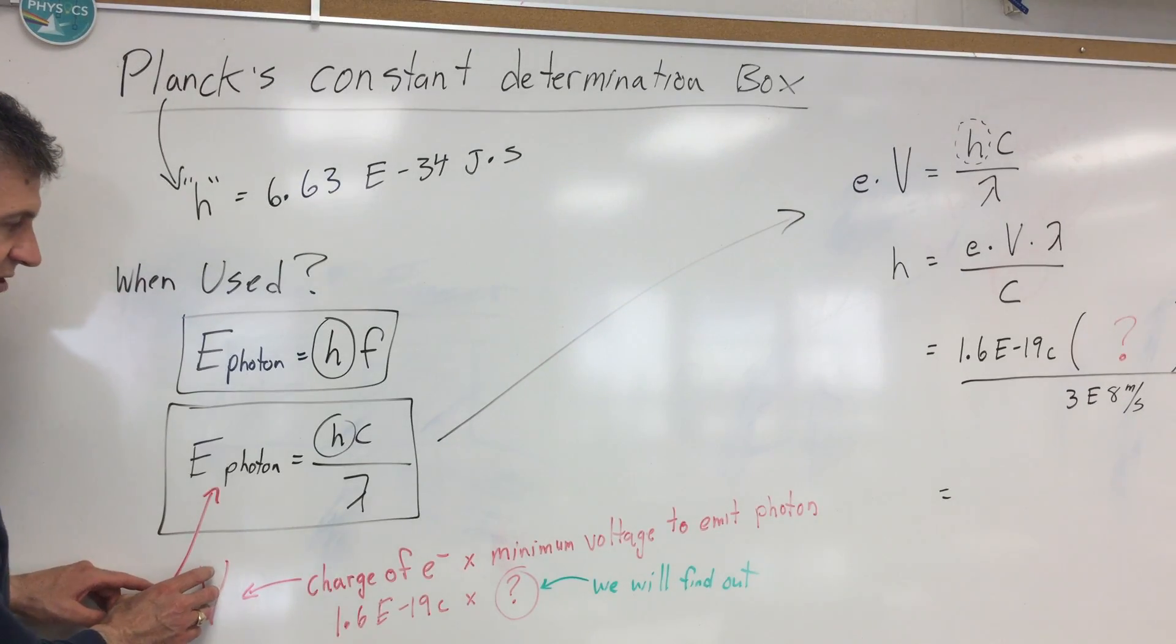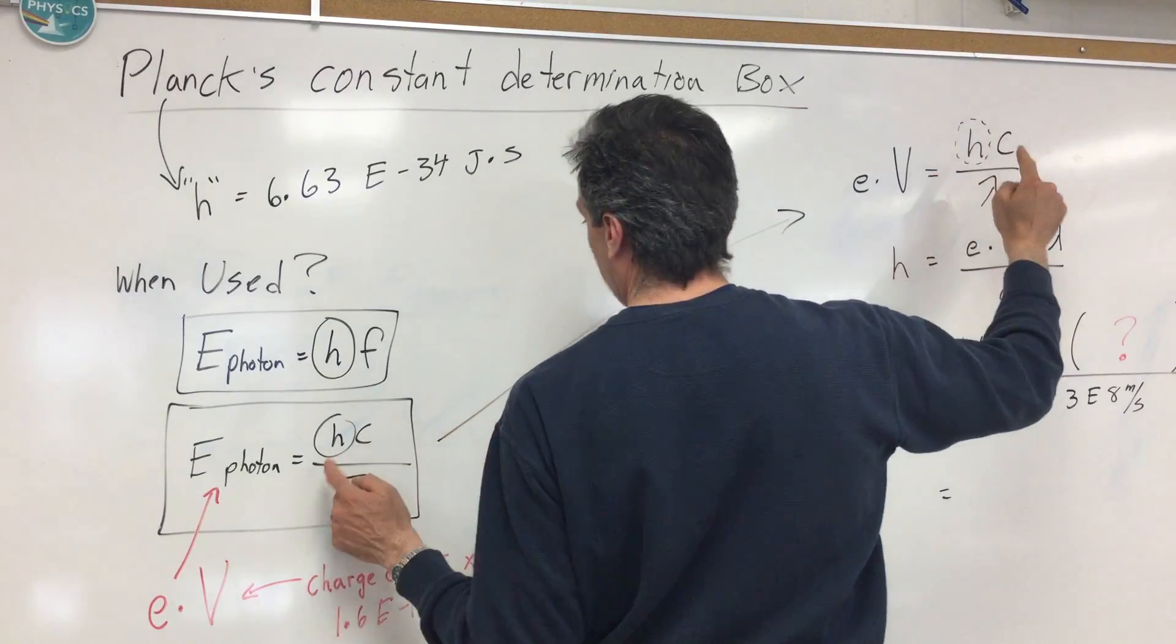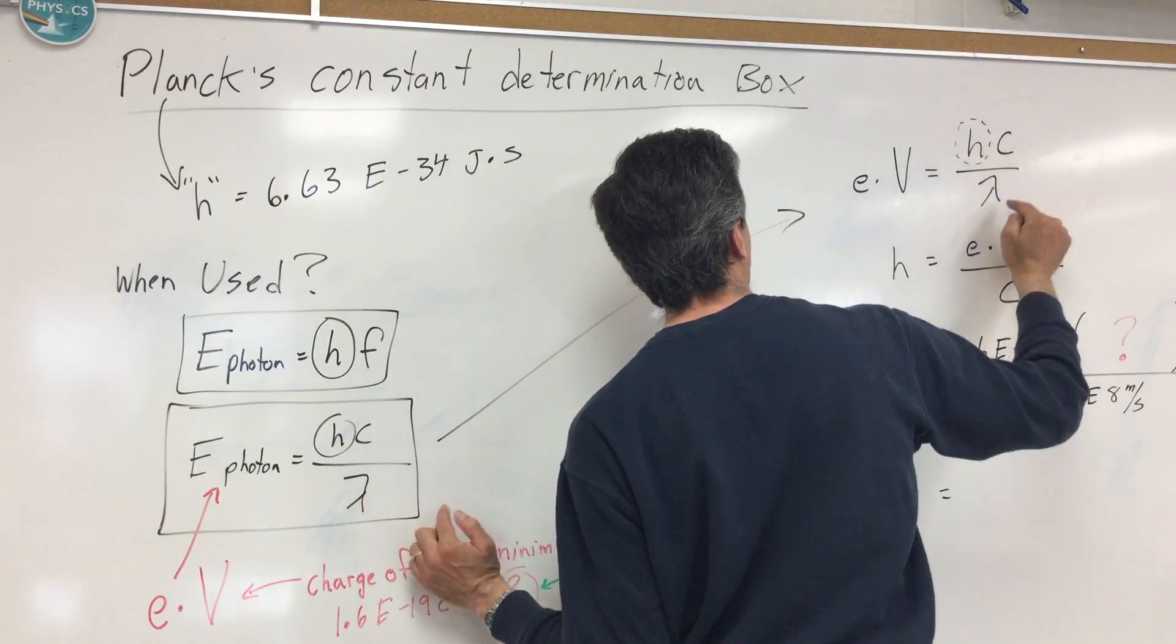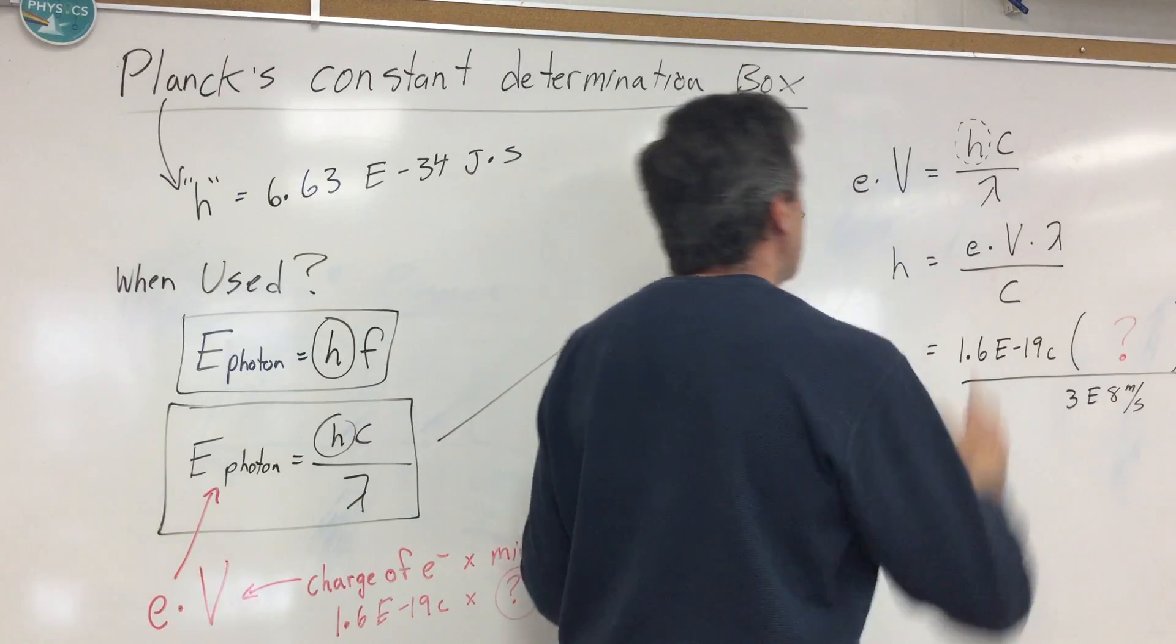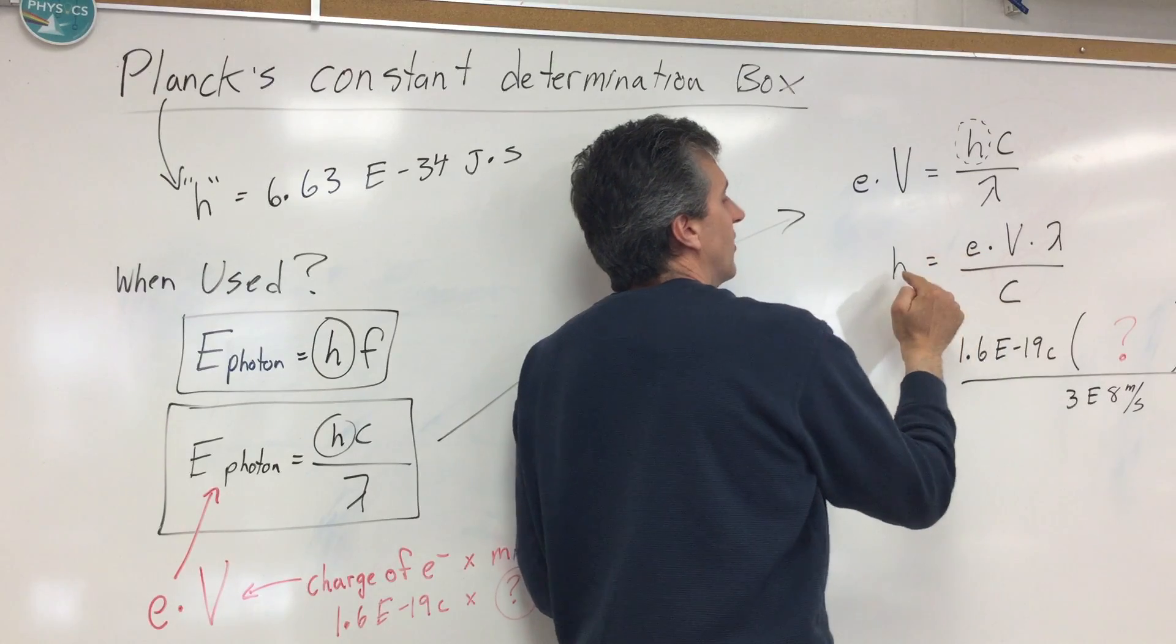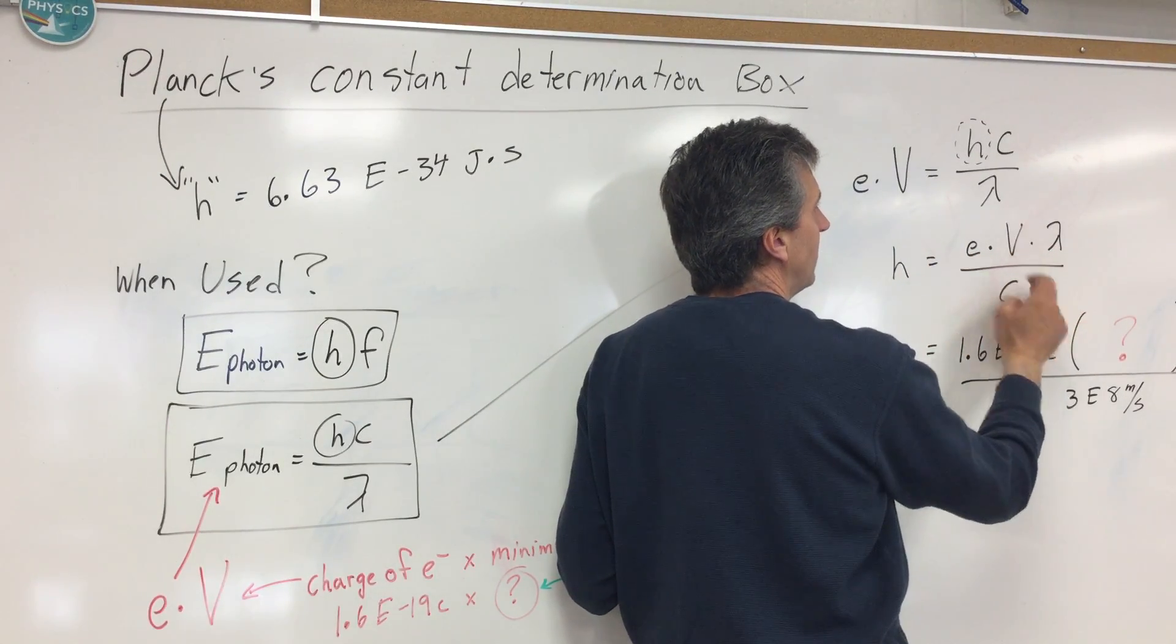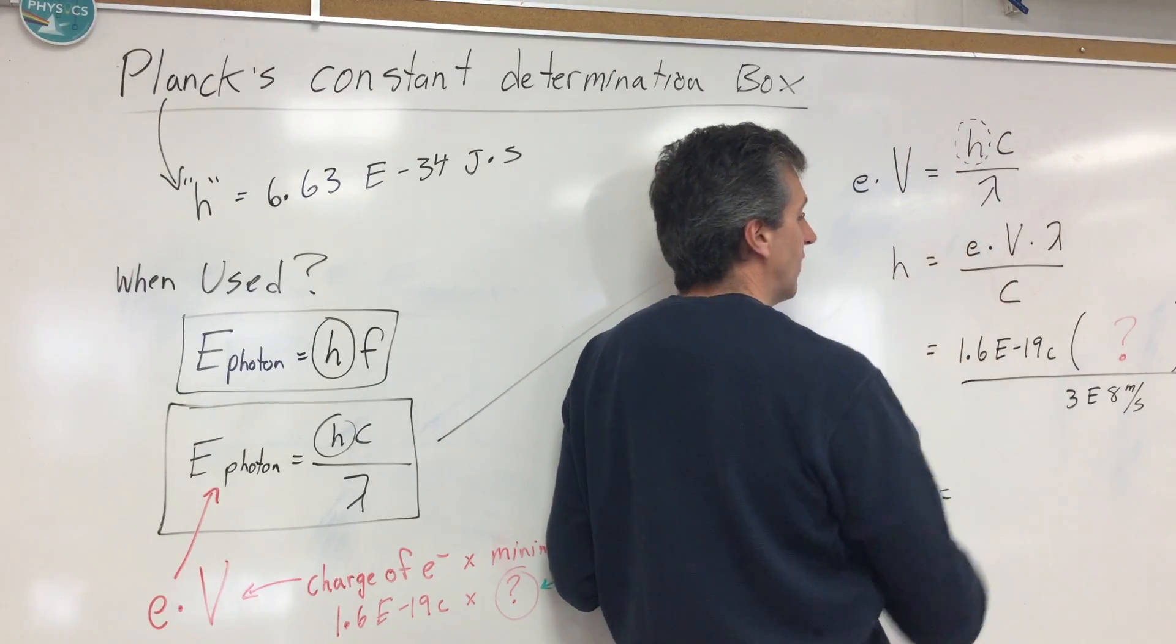All right. So here we go. Let's take this equation and change it slightly. So instead of E of a photon, we're going to say EV. And we're still going to have H C over lambda. That's going to remain the same. But since I'm solving or I want to know Planck's constant, I'm going to rearrange it. So I'm going to make it H is E times V times lambda over C. That's just an algebraic rearrangement.